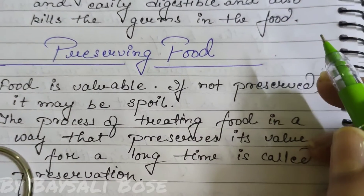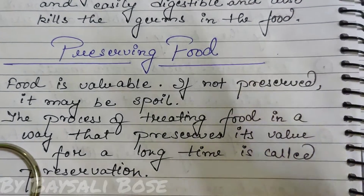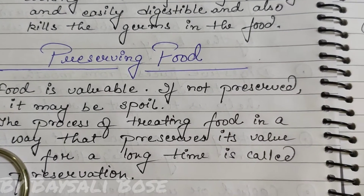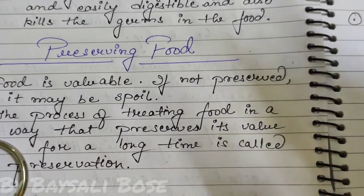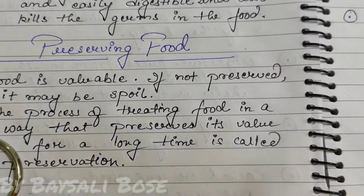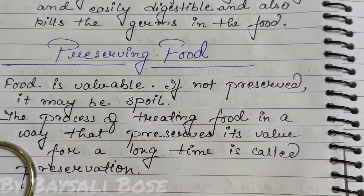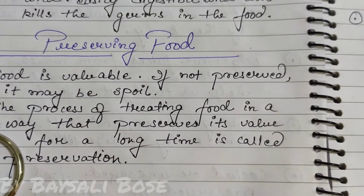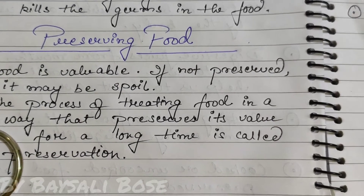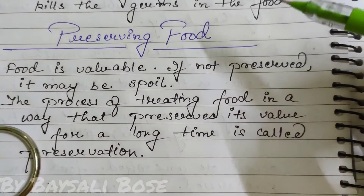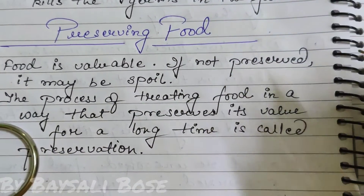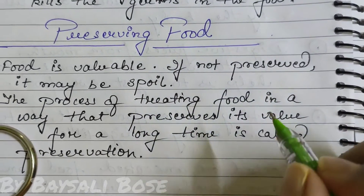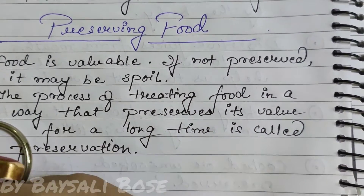Preserving food is important so that food does not get spoiled. Food is very valuable for us. The process of treating food in a way that preserves its value for a long time is called preservation.